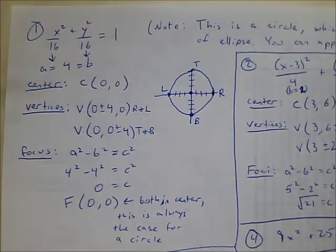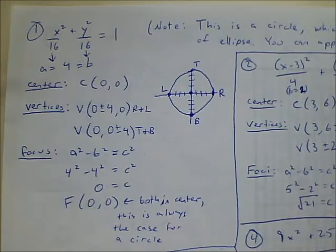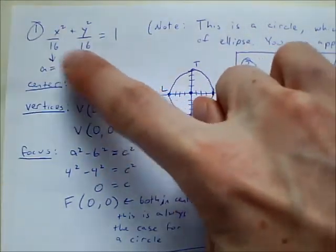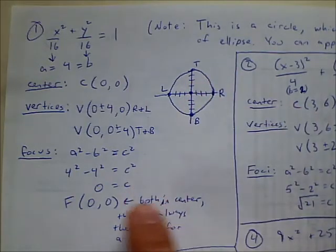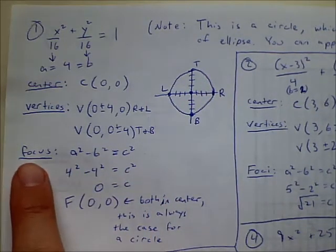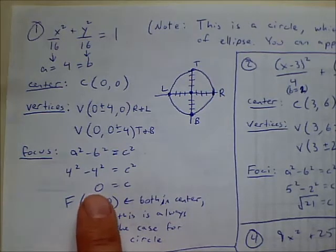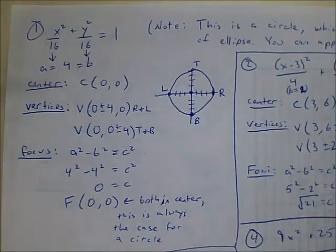You can work it out as an ellipse, or you could multiply through by 16 and work it out just like a circle problem. Since this is the ellipse section, I worked it out as an ellipse. The center is at (0, 0), and A and B are both 4. One interesting feature of a circle worked out as an ellipse is that the foci both end up being at the center, because C comes out to 0. That's always going to be the case for a circle.